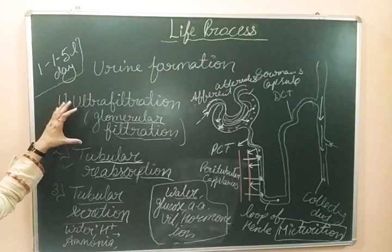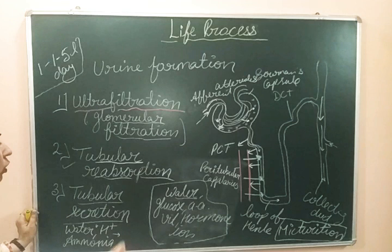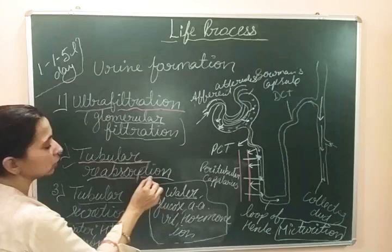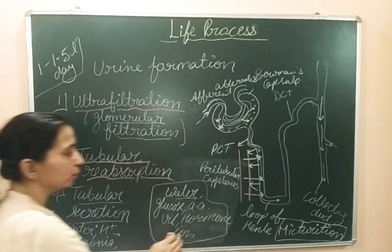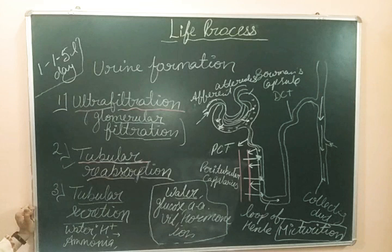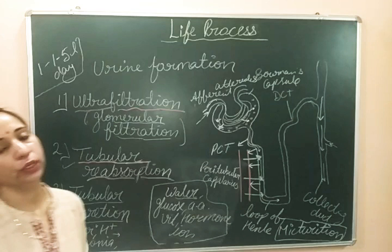After micturition, we get rid of this nitrogenous waste in the form of urine. So this is the complete process of urine formation, which takes place in three important steps. The first is ultrafiltration, also called glomerular filtration — it is called glomerular filtration because it happens in the glomerulus. The second step is tubular reabsorption, where blood capillaries reabsorb the useful substances from the filtrate — also known as selective reabsorption. The third step is tubular secretion, in which the blood releases harmful or surplus substances back into the renal tubule part of the nephron.